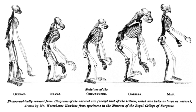A character state is homoplastic, or an instance of homoplasy, if it is shared by two or more organisms but absent from their common ancestor or from a later ancestor in the lineage leading to one of the organisms. It is therefore inferred to have evolved by convergence or reversal. Both mammals and birds can maintain a high constant body temperature, i.e., they are warm-blooded. However, the accepted cladogram indicates that their common ancestor lacked this character state, so warm-bloodedness must have evolved independently in the two clades. Hennig's auxiliary principle states that shared character states should be considered evidence of grouping unless contradicted by the weight of other evidence.